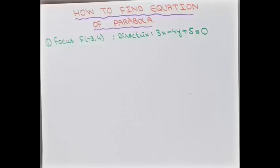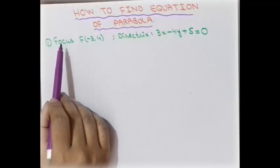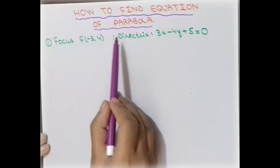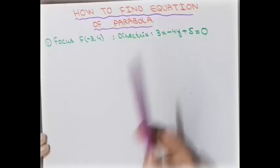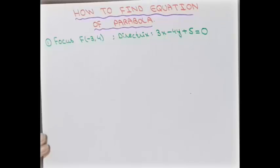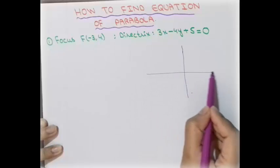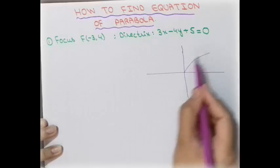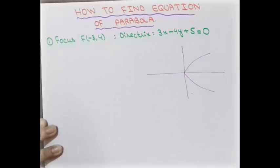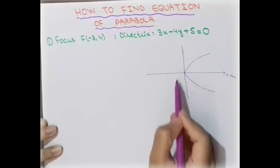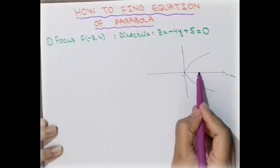Today's topic is how to find the equation of the parabola. In today's lecture we are given a focus point and a directrix line. If we are given this type of focus point and directrix line, then how do we find the equation of the parabola? As we already discussed the equation of the parabola in different situations, if I plot a rough parabola open towards the right side — towards the positive axis — with the vertex at the origin, here is our focus point.